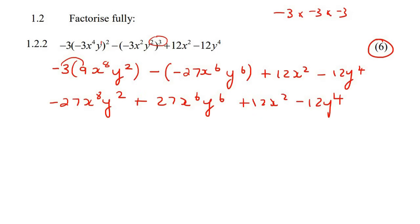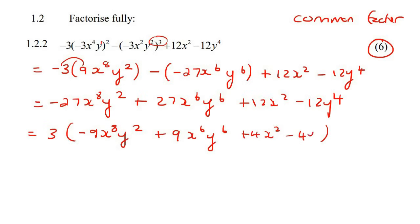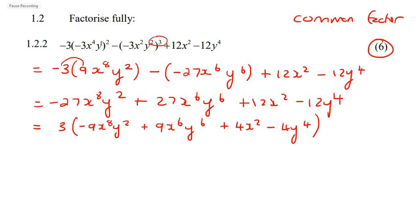So let's see what we can do. We should always try to, now we're going to start factorizing. So we're always going to start with a common factor. So there is a common factor in these numbers. The number three can go into all of them. So I don't yet know if we should take out a negative or a positive three, but we'll figure that out as we go along. So I'm just going to take out a positive three for now. And that's going to leave us with negative 9x8 y2, positive 9x6 y6 plus 4x squared minus 4y4.